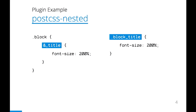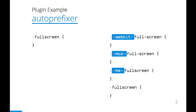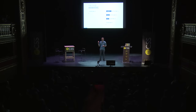For example, we can do preprocessor tasks with PostCSS, like unwrapping nested rules, as Sass does. But we created PostCSS not for old tasks, but for new tasks — tasks that were impossible with old preprocessors. For example, AutoPrefixer is just a PostCSS plugin.